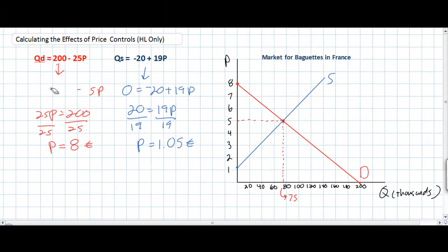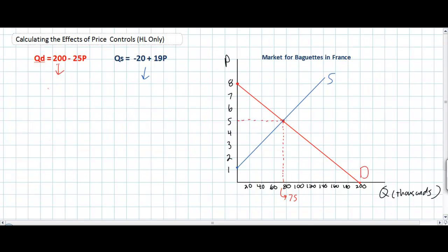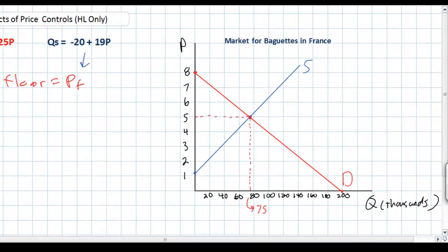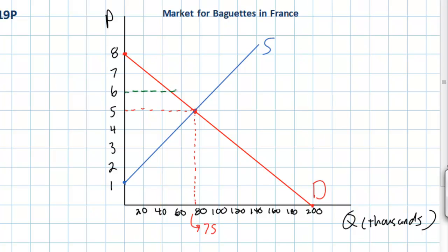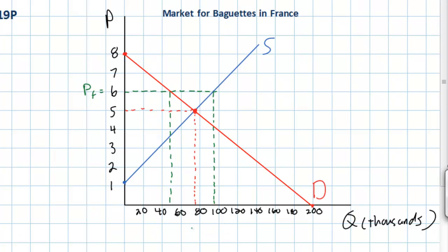The next question is what effect will maximum and minimum price controls have on the quantity demanded and the quantity supplied? Let's start with a price floor — a minimum price below which the price of baguettes is not allowed to fall. We'll set a price floor at 6 euros, labeled PF on the graph. The purpose of this price floor is to help producers by raising the price above the free market equilibrium, which will lower quantity demanded but increase quantity supplied.